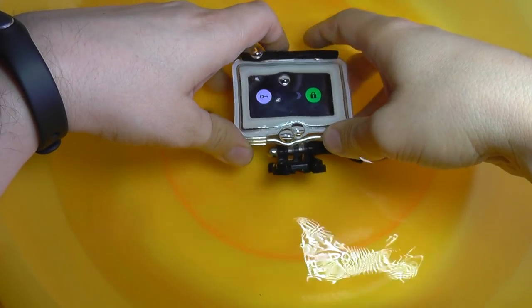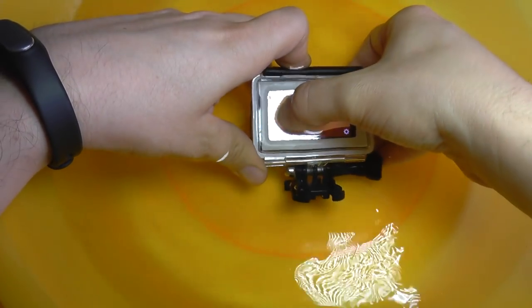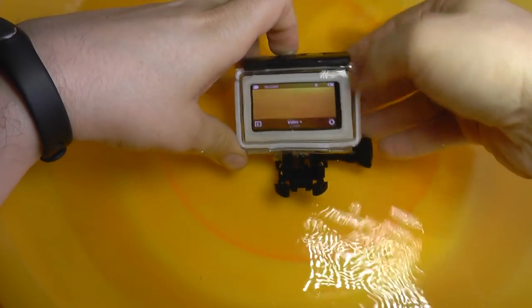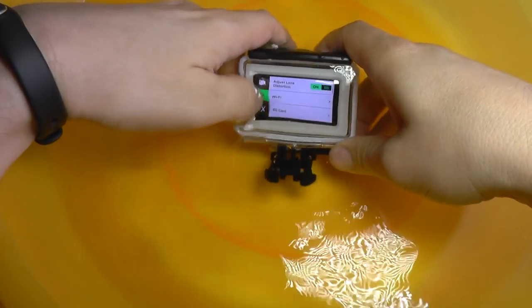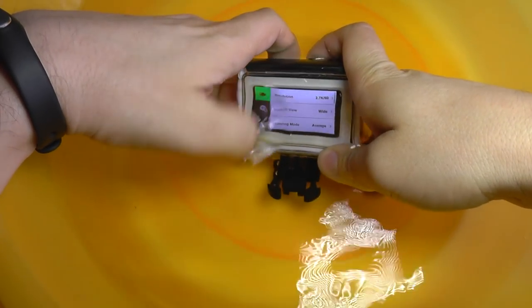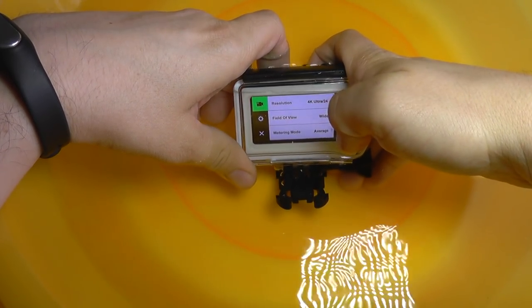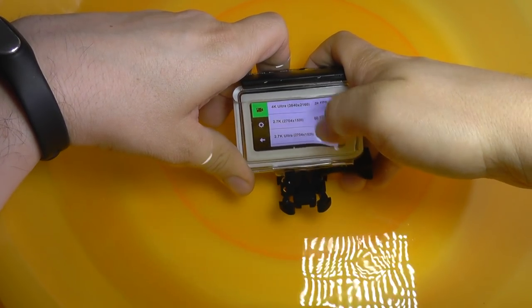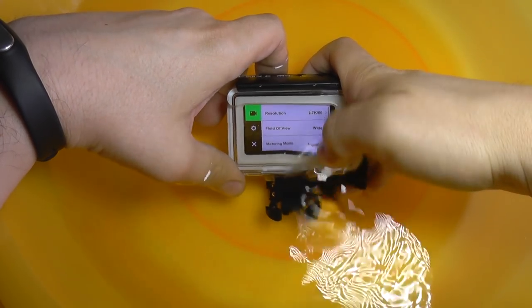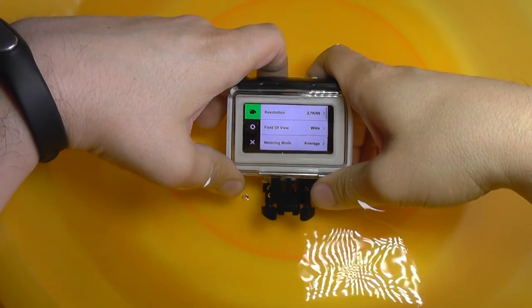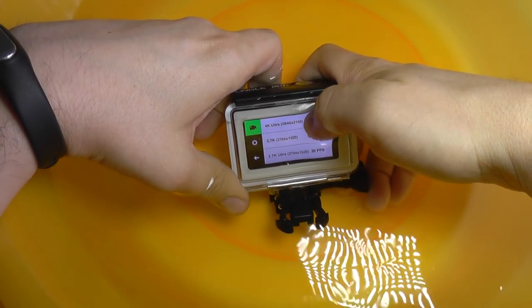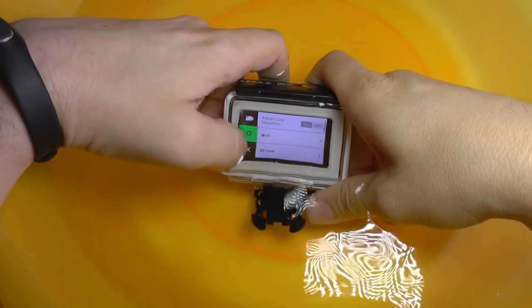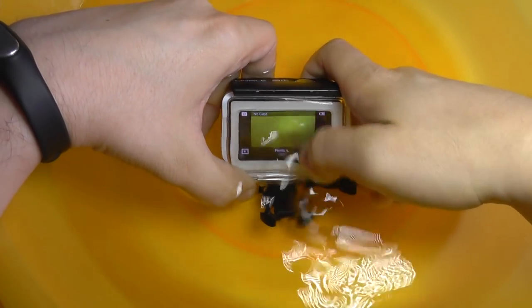The camera is underwater and I'm going to unlock the screen. I have unlocked the screen, go to the settings. It's working fine. I'm going to change the resolution. I'm going to use 60 frames per second in 2.7K resolution. Now I'm going to switch to 4K. It's still working fine. I can go back. Let's change modes.